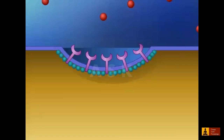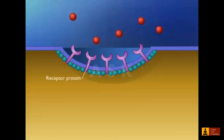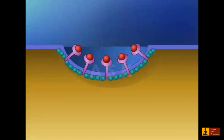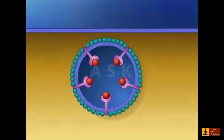Molecules to be transported first bind to specific receptors on the plasma membrane. The interior portion of the receptor protein is embedded in the membrane. The protein clathrin coats the inside of the membrane in the area of the pit. When an appropriate collection of molecules gathers in the coated pit, the pit deepens and seals off to form a coated vesicle, which carries the molecules into the cell.